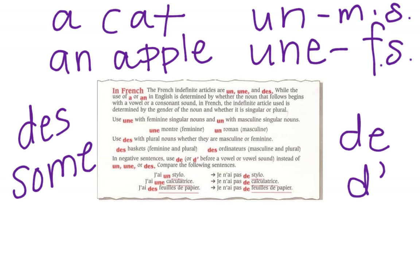So rather than saying 'yes, we have some apples,' you're saying 'no, we don't have any apples.' Examples: J'ai un stylo — I have a pen. Je n'ai pas de stylo — I don't have any pens. J'ai une calculatrice — I have a calculator. Je n'ai pas de calculatrice — I don't have a calculator. J'ai des feuilles de papier — I have some paper. Je n'ai pas de feuilles de papier — I don't have any paper.